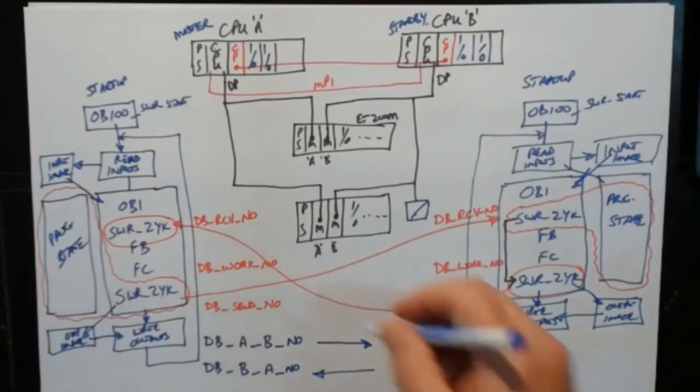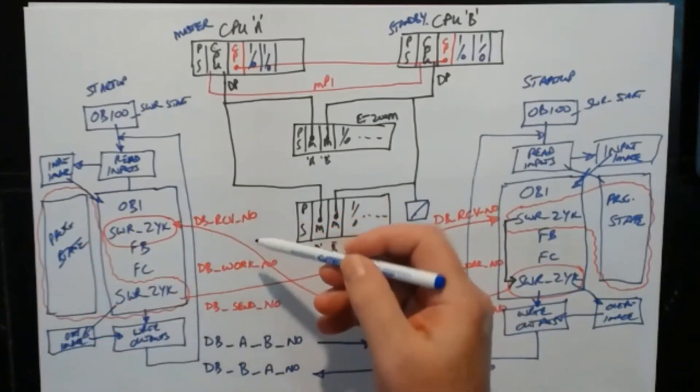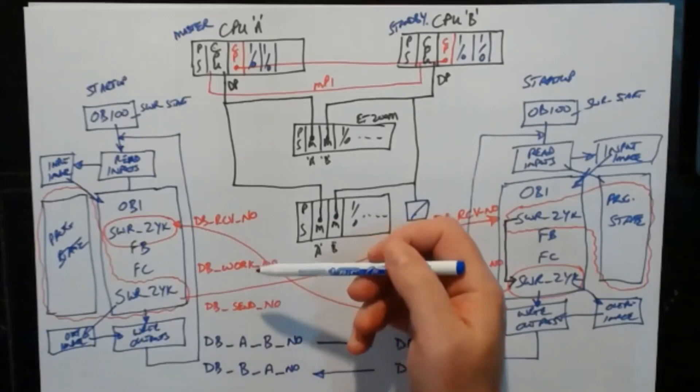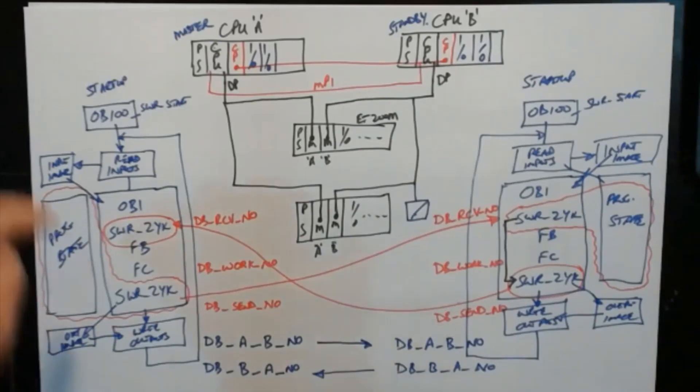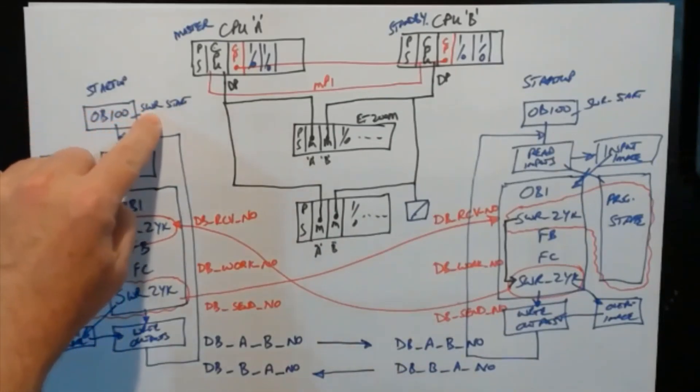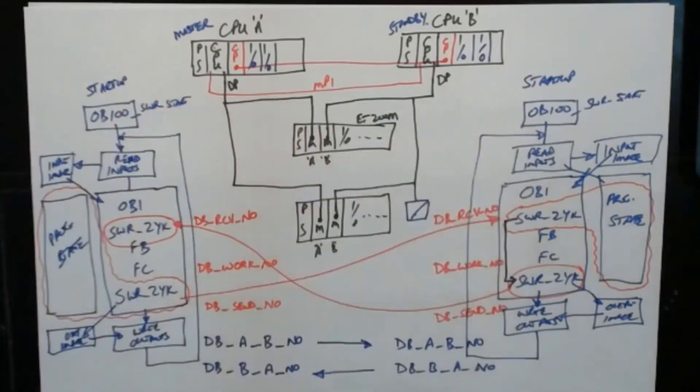But these five DBs, the work DB, the send DB, the receive DB, and the DB A to B and B to A, are all generated on startup by the software redundancy start in both PLCs. They only need to be reserved, and do not need to be in your project.